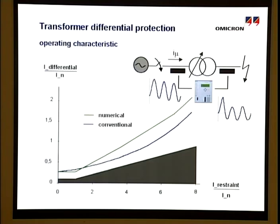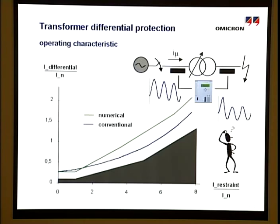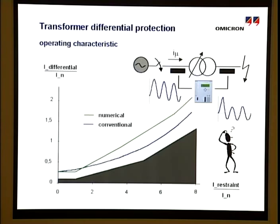While the effect of the first two differential currents can be calculated easily, the setting in the area of high stabilizing currents is difficult due to the non-sinusoidal behavior. Therefore, it is mainly based on experience. Many numerical relays are nowadays supplied with additional saturation detectors.